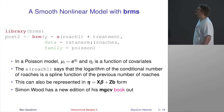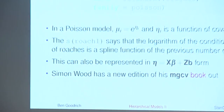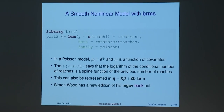What's cool about this model is that we're not necessarily saying the log number of roaches is a linear function of the previous number of roaches — it could be nonlinear. With animals, we might have reason to think it's an exponential function: the more roaches at the beginning, the more babies they'll have, and by the end you'd have way more roaches.